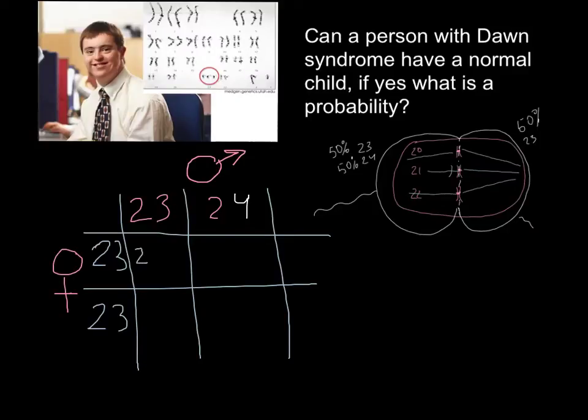What we're going to have here would be in this square 23 from the mother and 23 from the father side. Here we have 23 from the mother side and 24 from the father side. 23 from the mother side, 23 from the father side. 23 from the mother side and 24 from the father side.